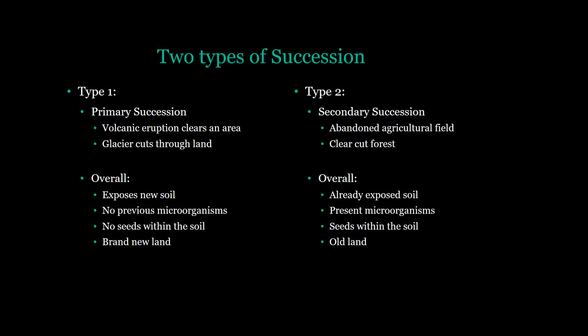Primary succession is when newly exposed land is colonized — like when an ice age ends and the ice recedes, or when a volcanic eruption occurs, creating a new layer on top of the old soil. New soil is exposed with no previous seed bank or microorganisms. It is basically a fresh piece of land for species to colonize.